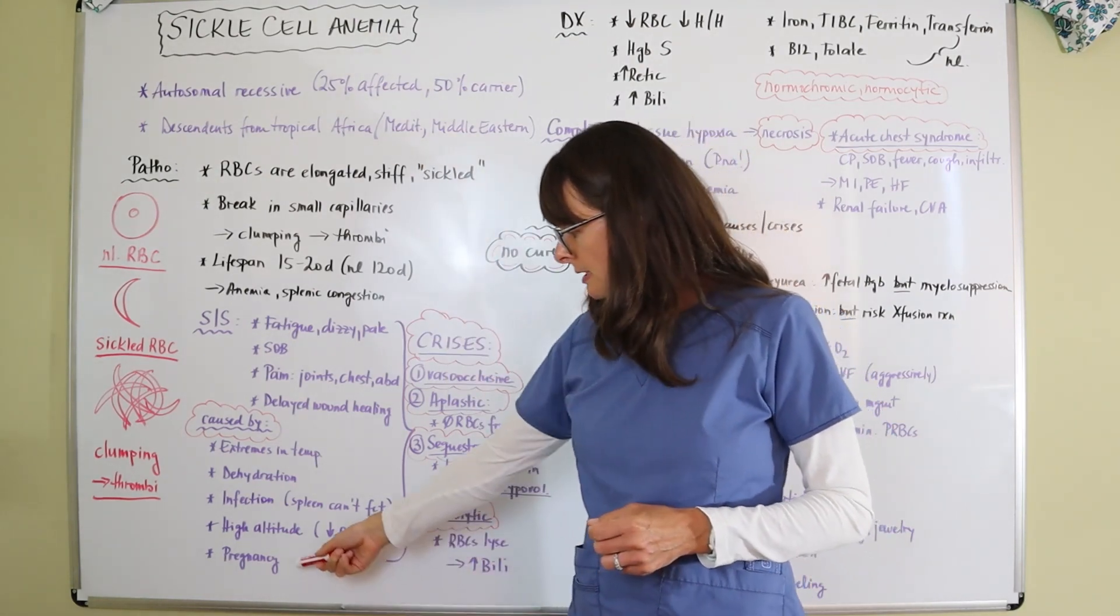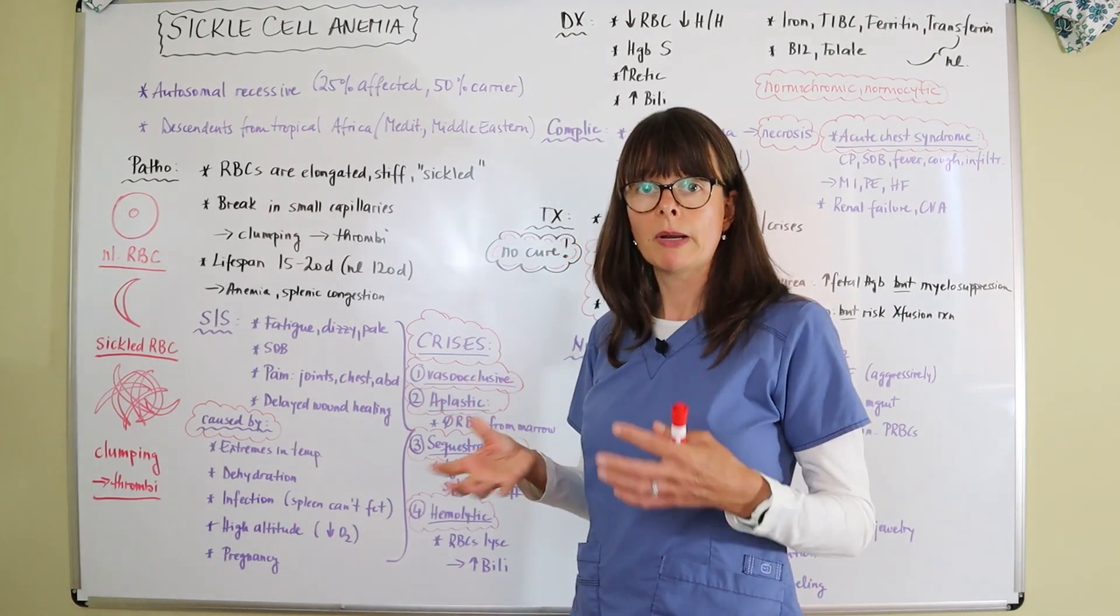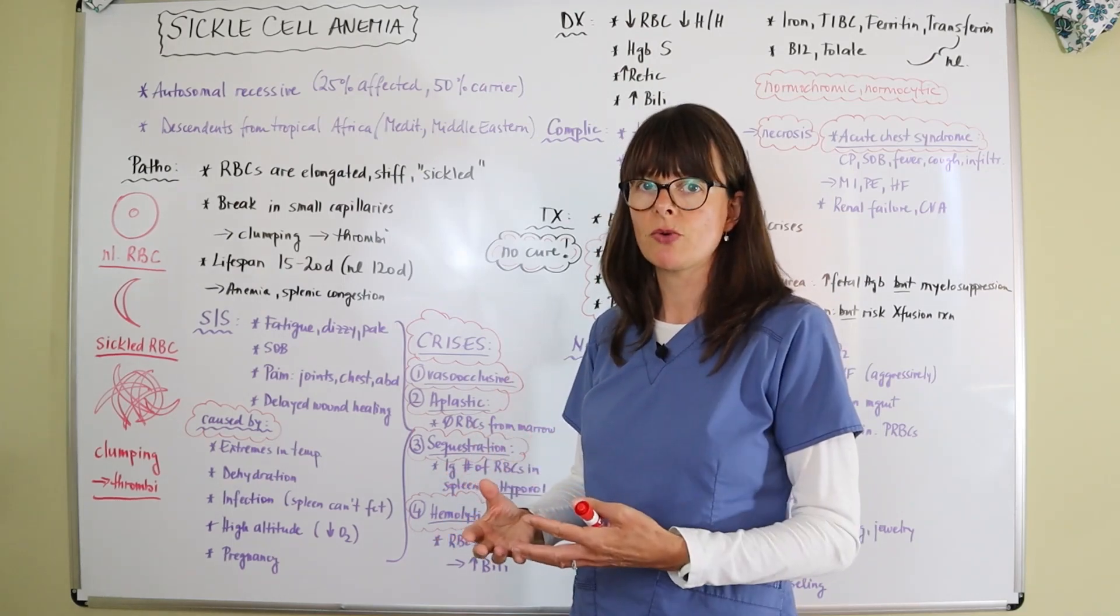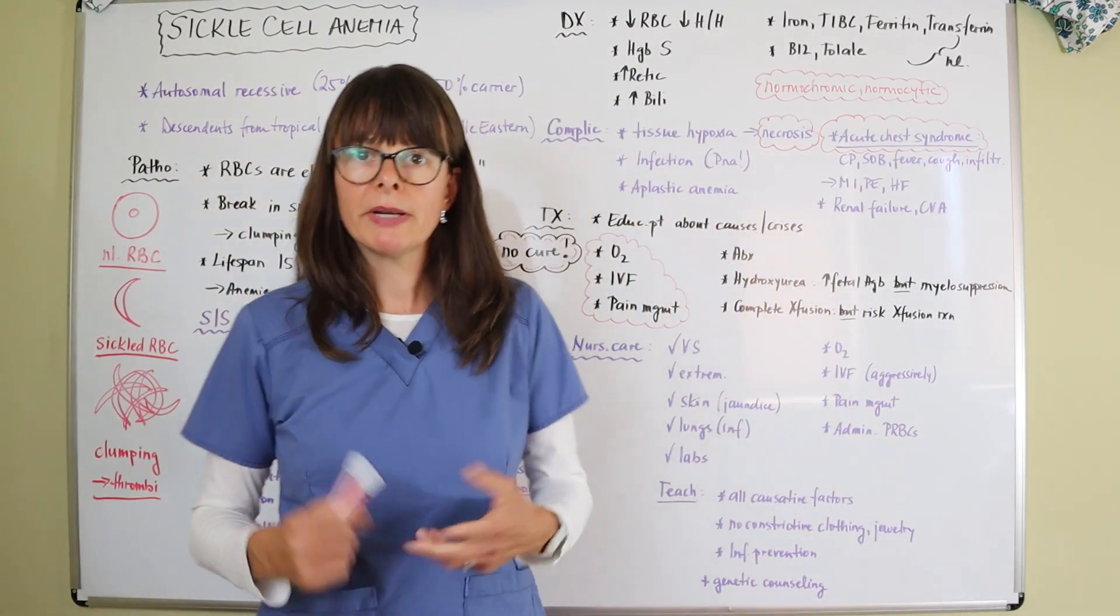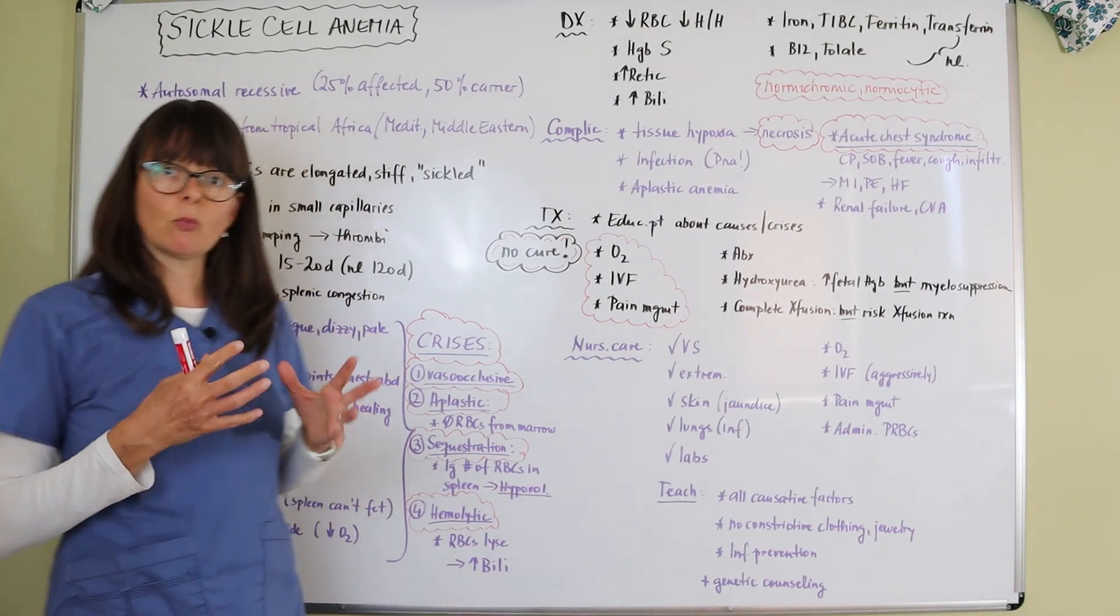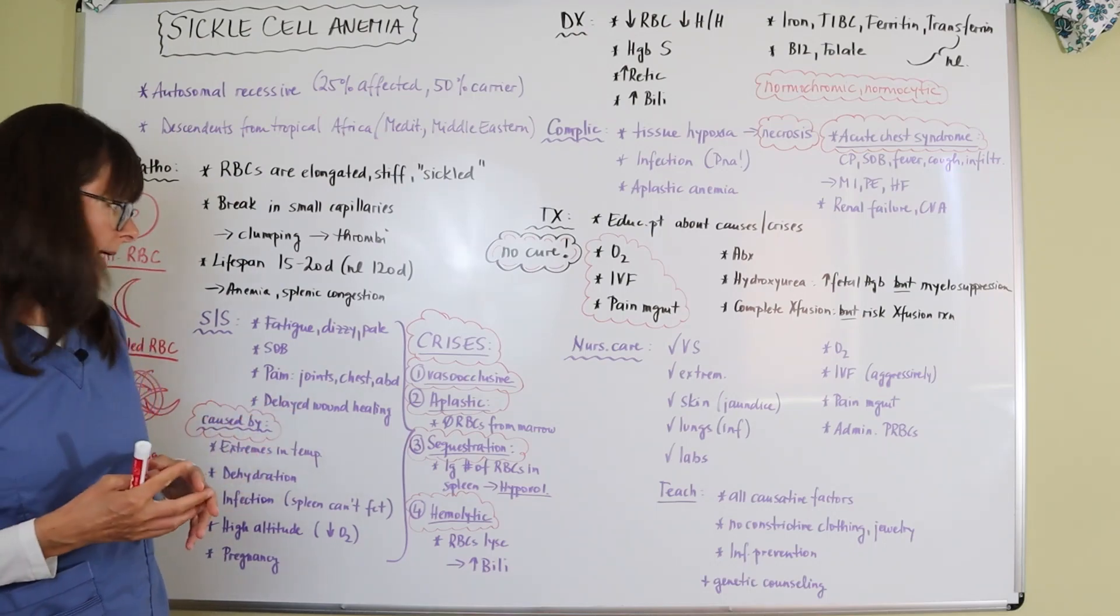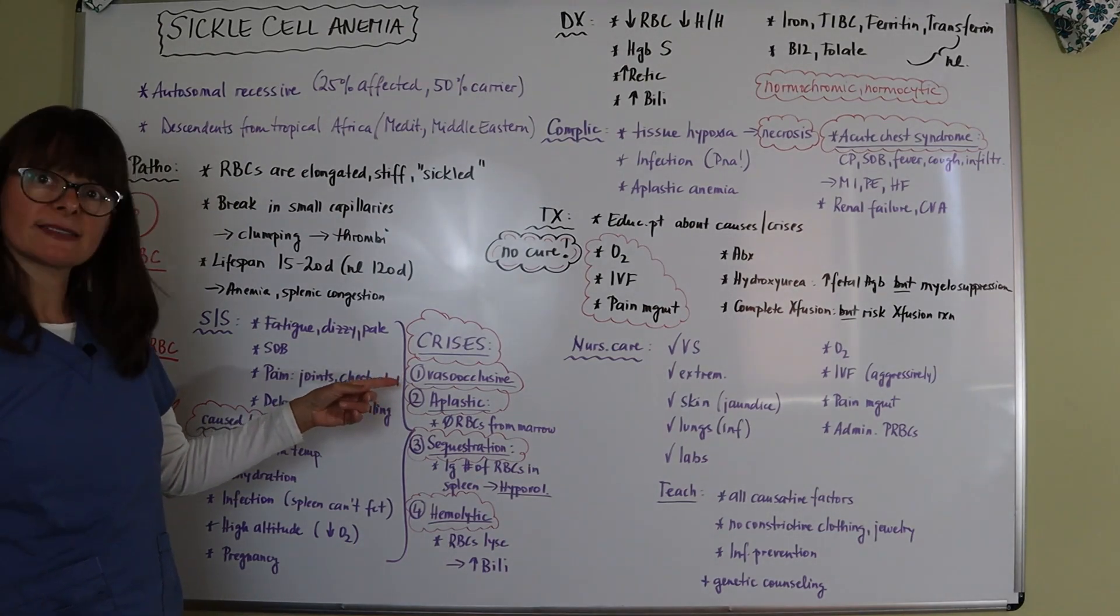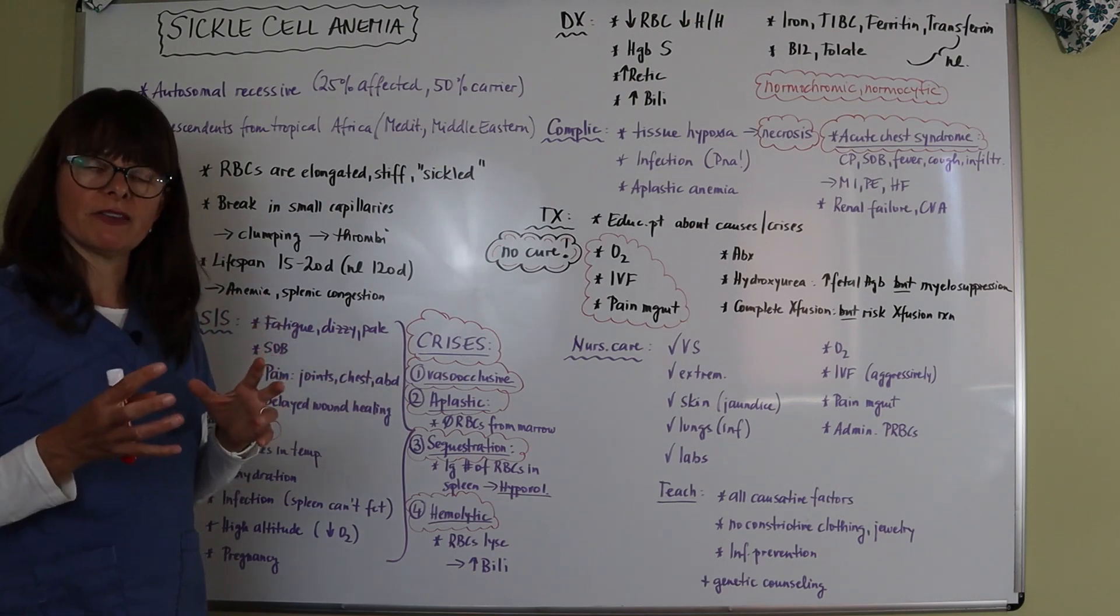And then pregnancy, we know that pregnant patients are at risk for blood clot formation, and so people with sickle cell anemia are even more so at risk because of that clumping we talked about. Many times the patients won't really have symptoms all the time, but then when they are in a crisis, we have to distinguish between four different things that can happen. The crisis is first vaso-occlusive.